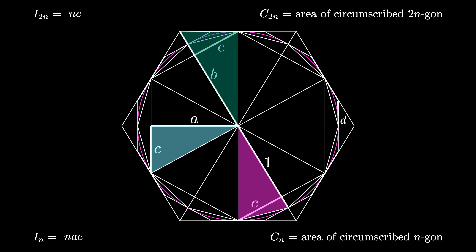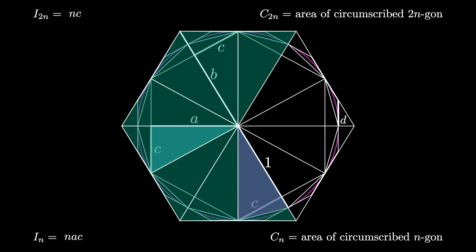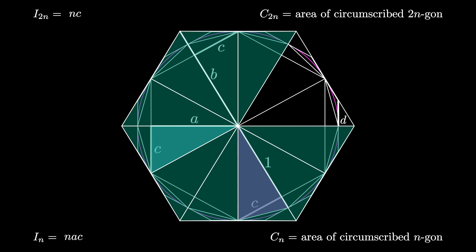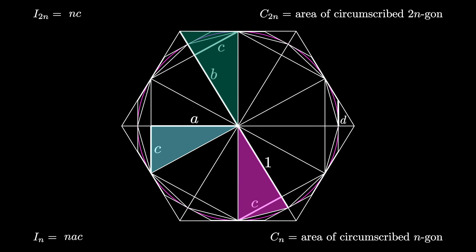Similarly, the area of the circumscribed n-gon can be found by taking this triangle and doubling it, and rotating the result n times. The triangle has a base of length b and a height of length c. Therefore, the area of the circumscribed n-gon is 2n times one-half times b times c, which simplifies to n times b times c.